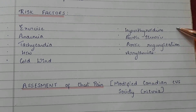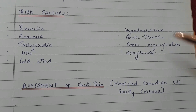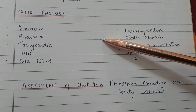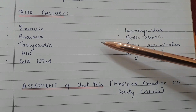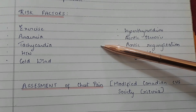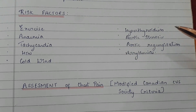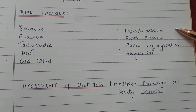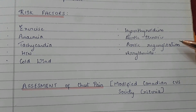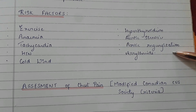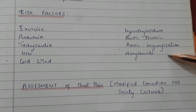Risk factors of angina include exercise, anemia, tachycardia, hypertension, cold wind, hypothyroidism, aortic stenosis, aortic regurgitation, and arrhythmias.